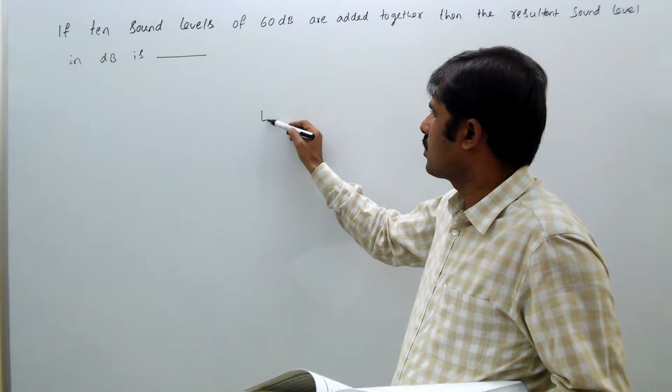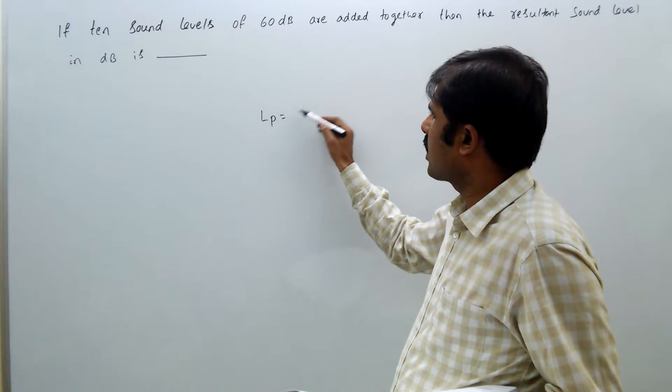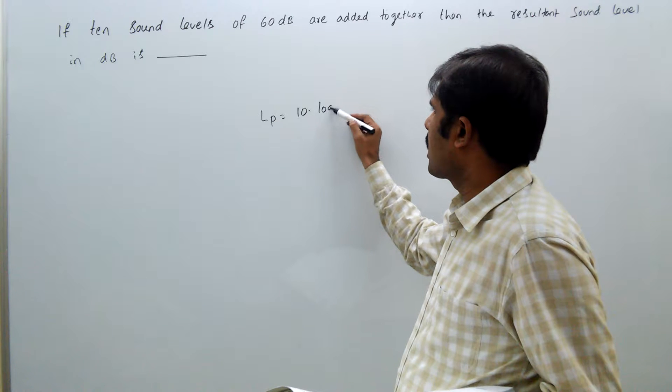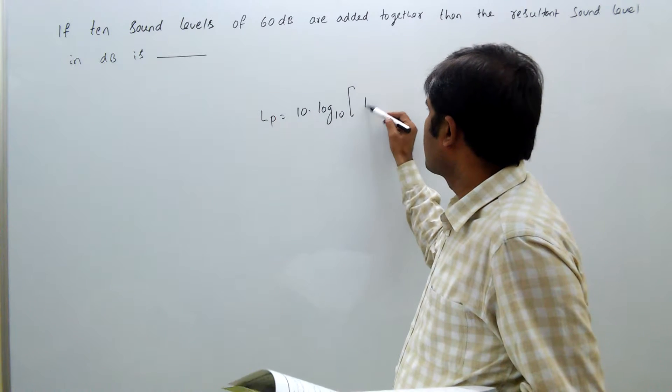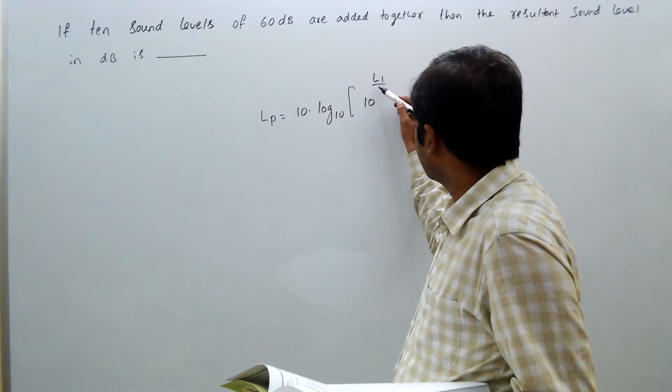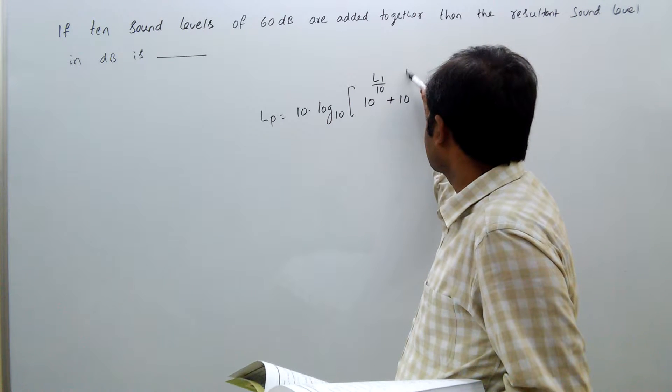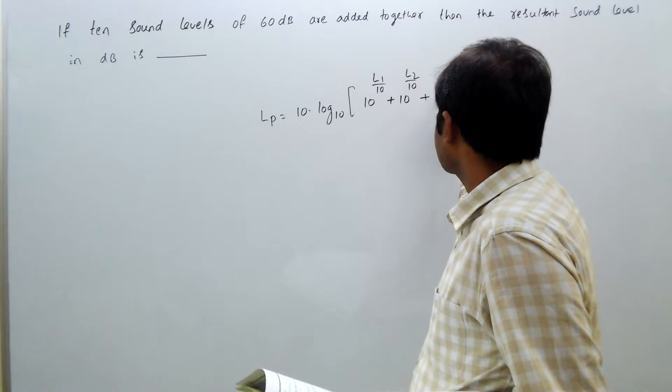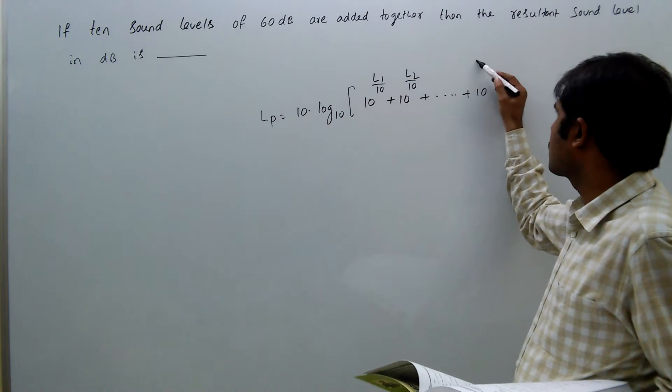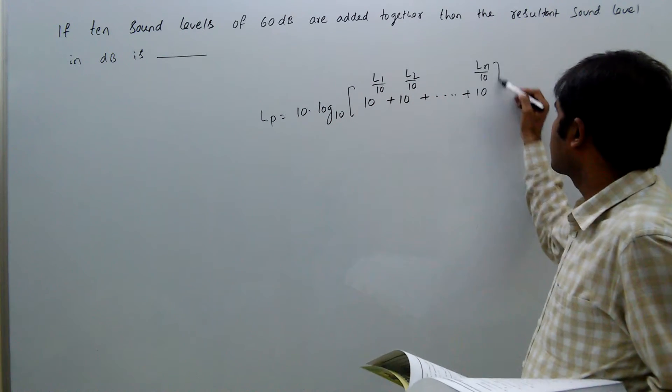We know Lp equals the formula: 10 log base 10 of (10^(L1/10) + 10^(L2/10) + and so on, up to 10^(Ln/10)).